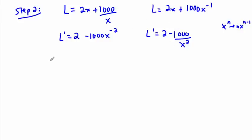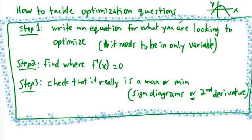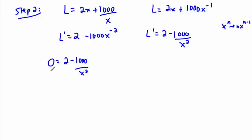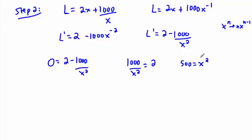Now I set the derivative equal to zero: 0 = 2 − 1000/x². Rearranging gives 1000/x² = 2, so x² = 500. Taking the square root, x = ±√500. Since a negative length doesn't make sense, we only keep x = +√500.